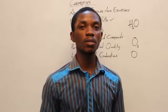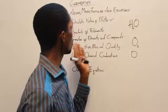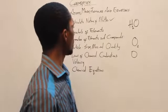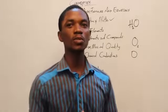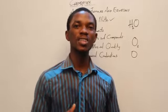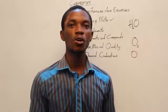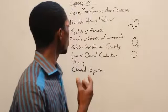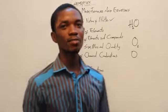Welcome back. Earlier in the lesson, we were talking about the particulate form of matter, and we were talking about the different components we can discuss when we talk about the tiniest form of matter. Let's proceed to talking about the symbols of elements.